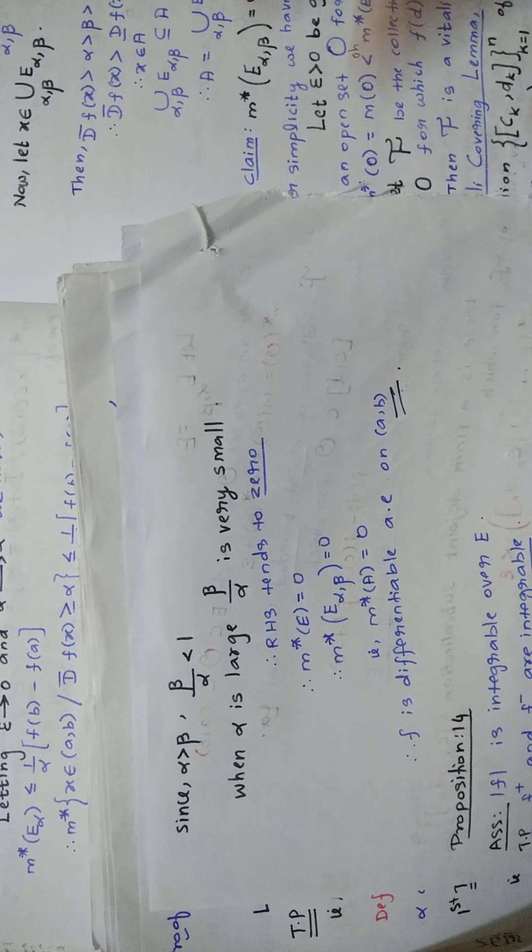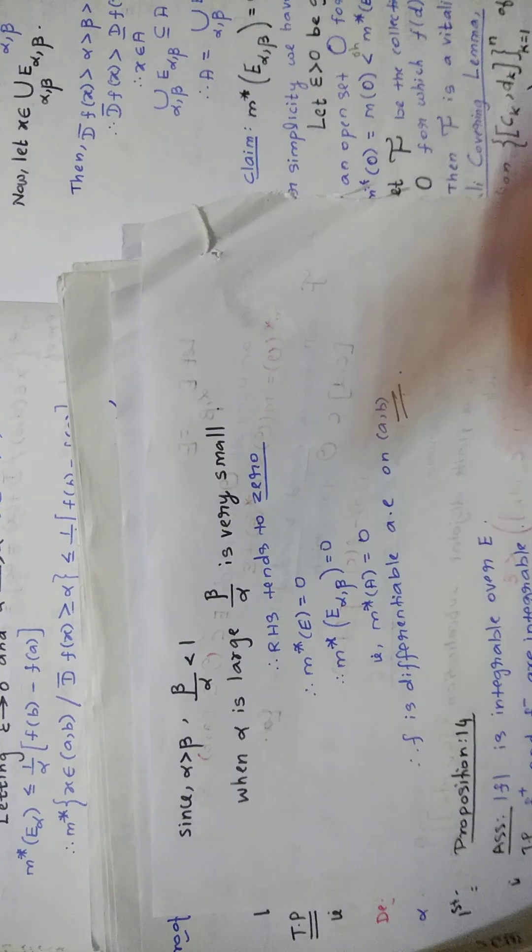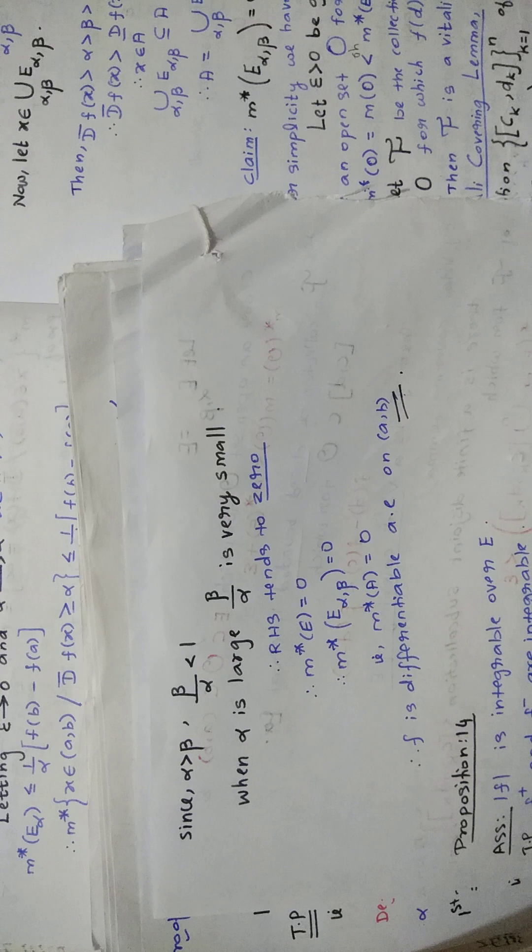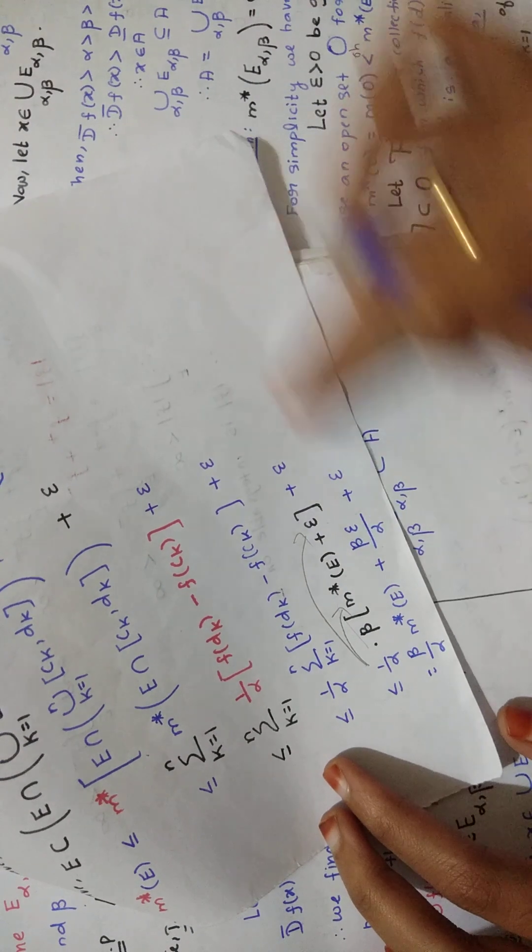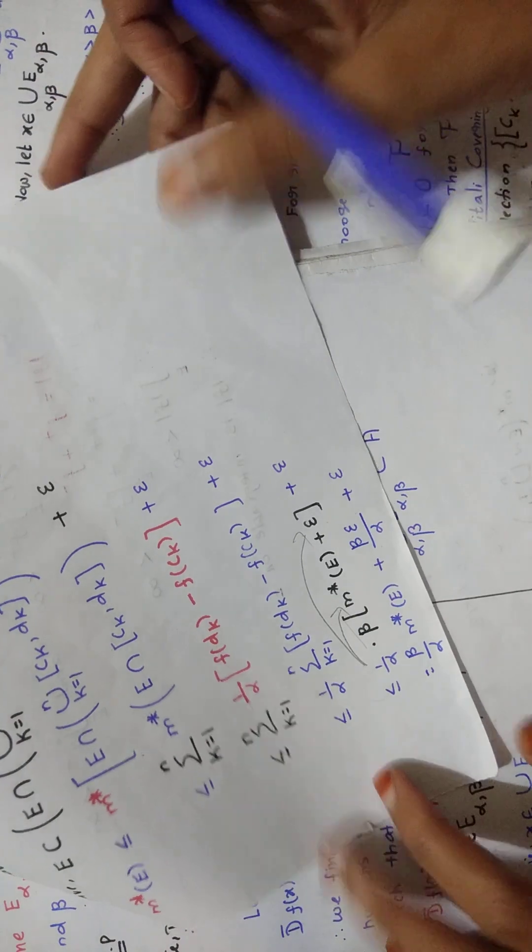When alpha is large, beta by alpha will be very small. So therefore, RHS of this equation will tend to 0. RHS will tend to 0, okay, because of that reason.